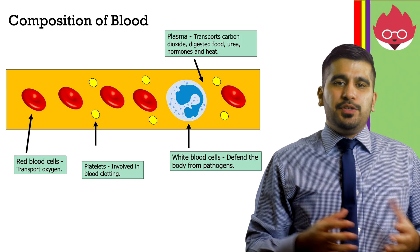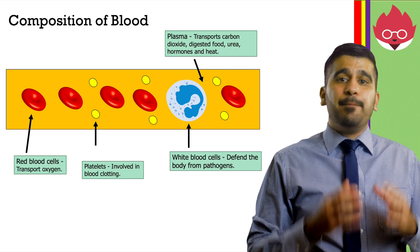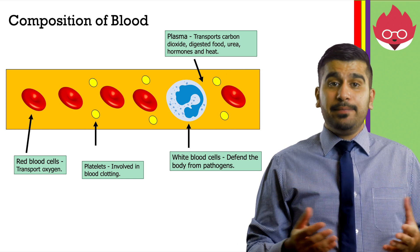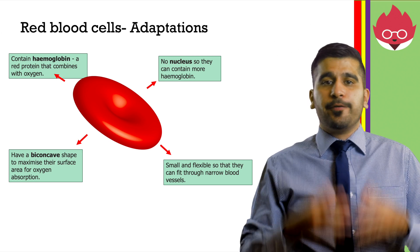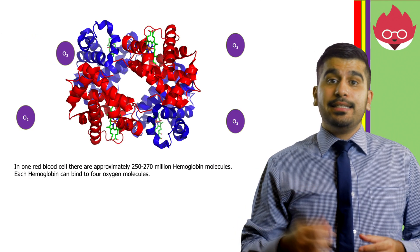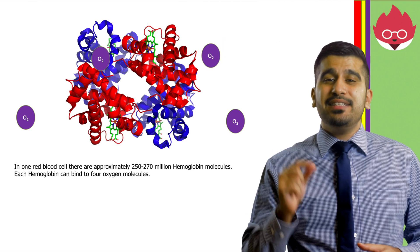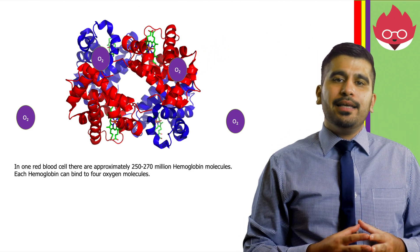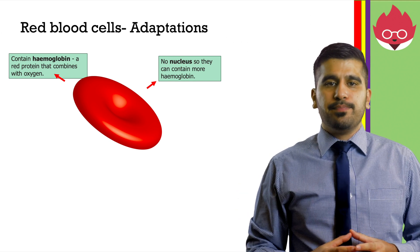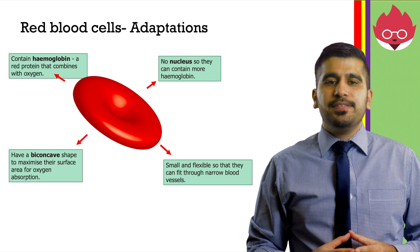Human blood is a tissue. Approximately 41% of it is composed of red blood cells, 4% white blood cells and platelets, and plasma makes up 55%. Plasma transports carbon dioxide, digested food, urea, hormones, and heat. Red blood cells are responsible for transporting oxygen around the body. They contain hemoglobin, an iron-containing protein that combines with oxygen. In one red blood cell, there are approximately 250 to 270 million hemoglobin molecules, each combining with 4 oxygen molecules. They have no nucleus, allowing them to carry more hemoglobin. They are small and flexible to fit through narrow blood vessels, and have a biconcave shape which maximizes their surface area for oxygen absorption.